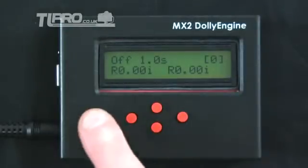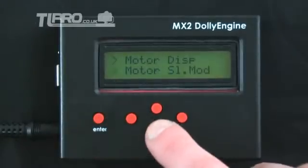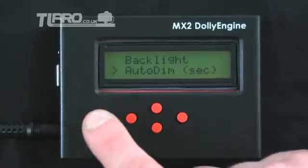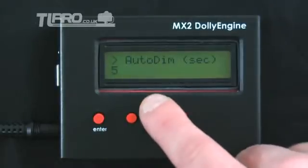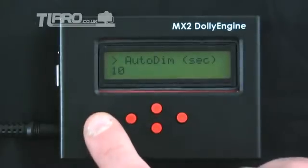Press enter to go to the main menu, down to the settings menu, enter, down to auto dim, enter, and we can change the number of seconds before the auto dim kicks in. Enter to save this value.